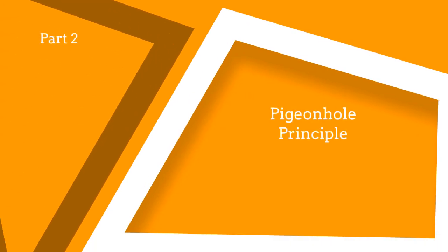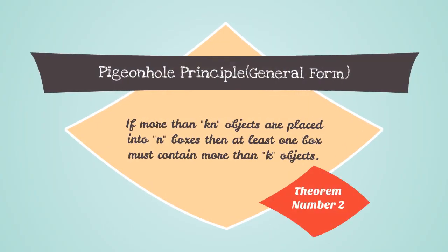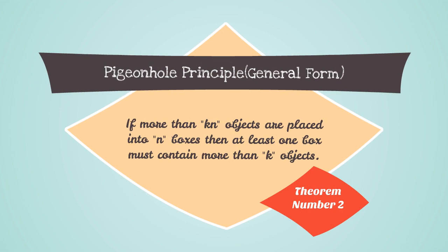The pigeonhole principle, Part 2. Here is the pigeonhole principle in its more general form. Theorem number 2. If more than k times n objects are placed into n boxes, then at least one box must contain more than k objects.